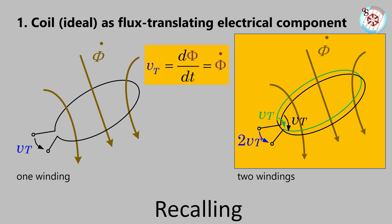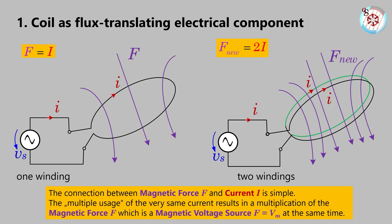What happens with current when used multiple times? Every time a turn carrying the same current is laid around the same area in space, the magnetic force increases by this amount of current. Therefore, the total MMF is the electric current times number of turns. So we could have guessed why this value is coined ampere-turns. Since the ampere-turns quantify the MMF, this is the available magnetic voltage Vm at the same time.